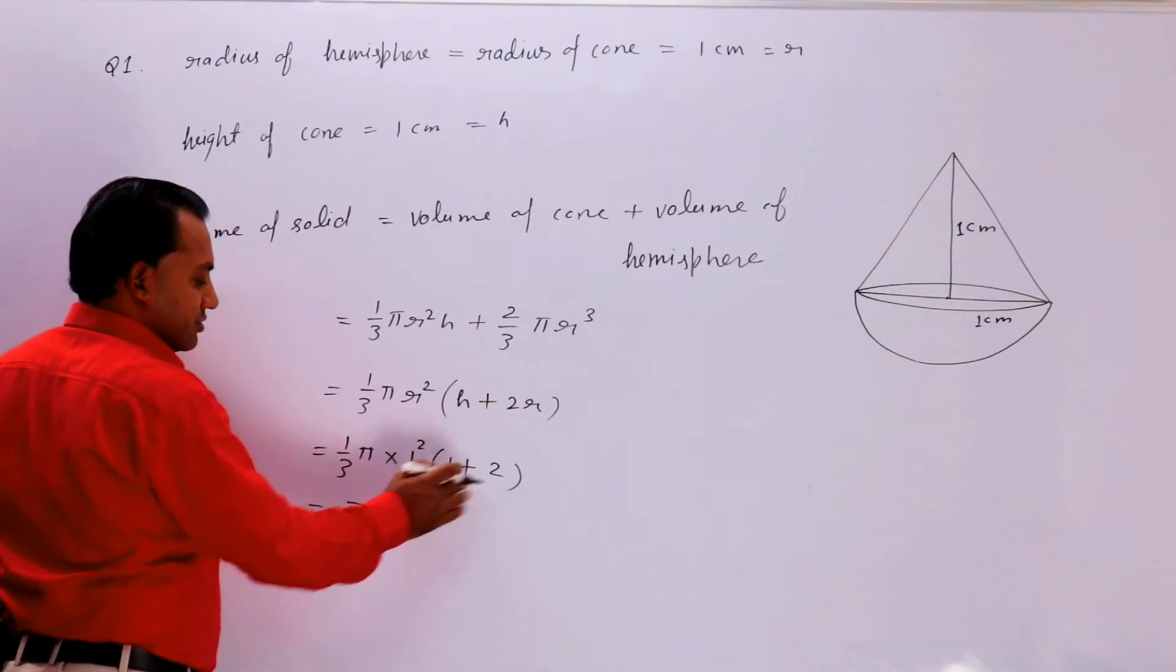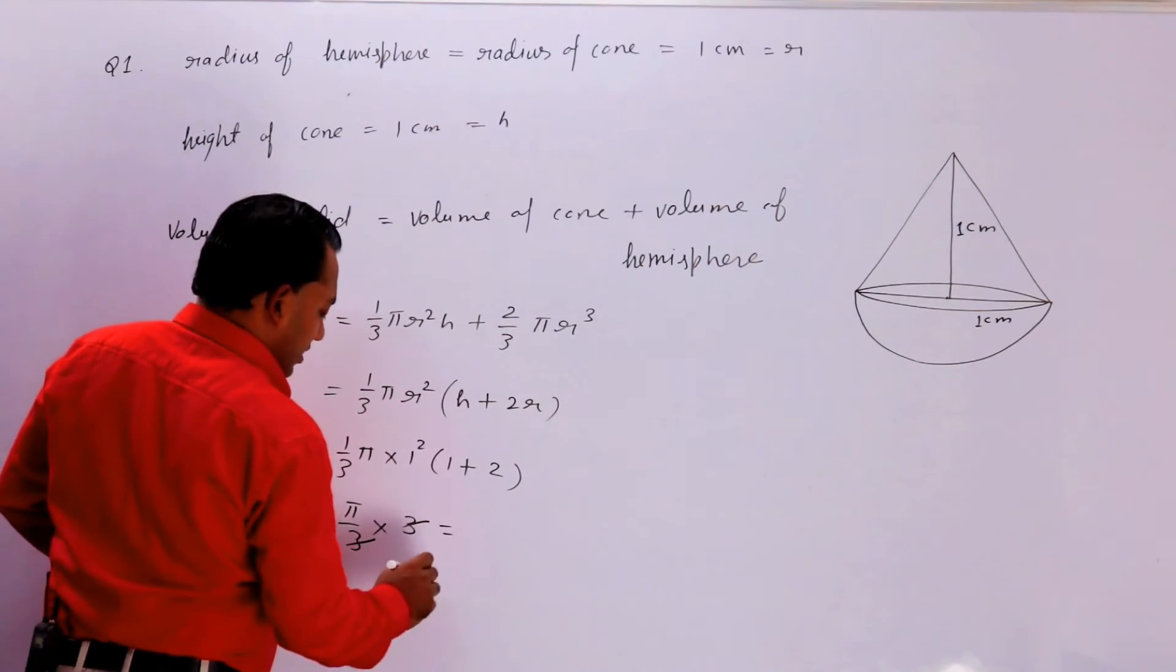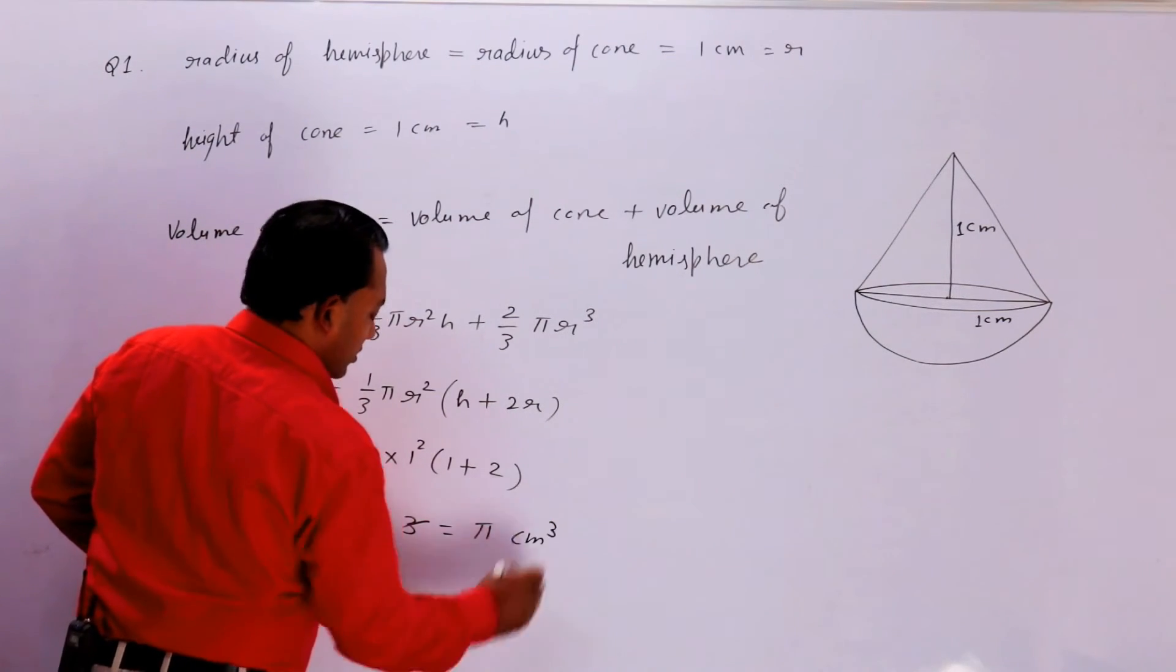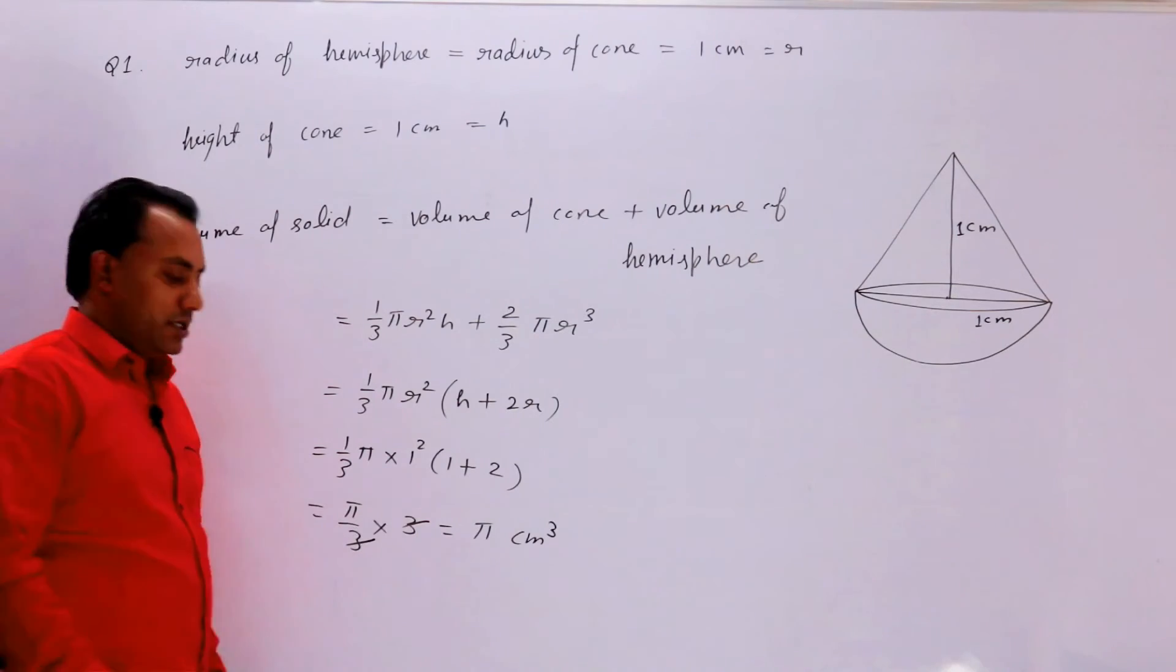1 square 1 ही रहेगा और 1 plus 2 is 3. यह कट गया, cancel हो गया. तो π centimeter cube. और यह आपका answer हो गया.